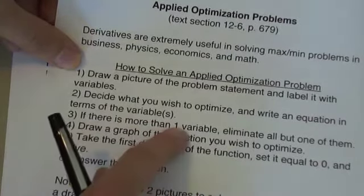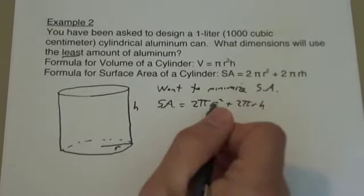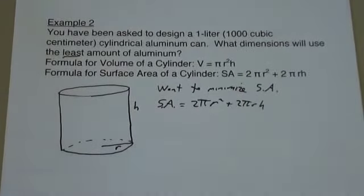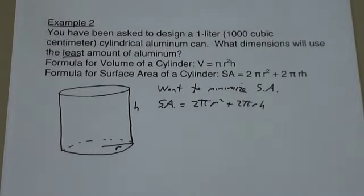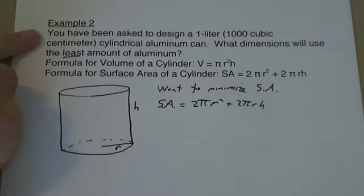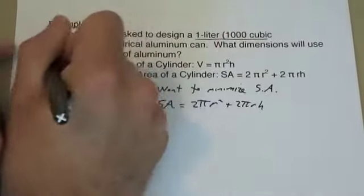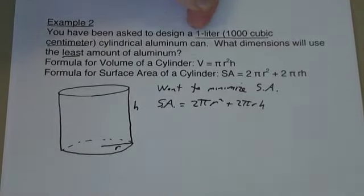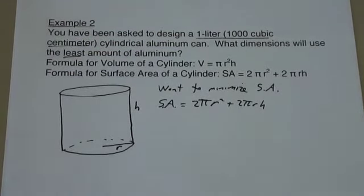Now we have to do step 3. If there's more than one variable, eliminate all but one of them. Here there is more than one variable — there's r's and h's. My choice here would be to eliminate h. To get rid of h, we need some more information, so look back at the problem. We've been given the volume of the can — the can's volume has to be 1,000 cubic centimeters. Let's use that to eliminate h.